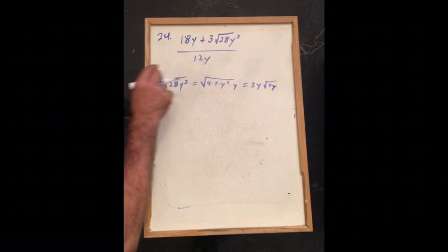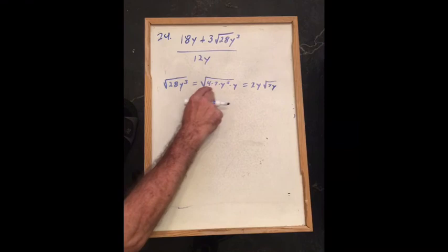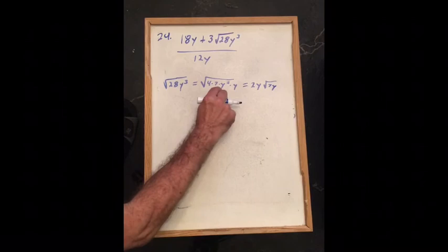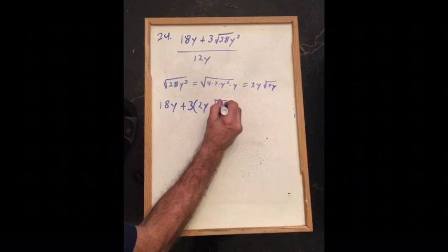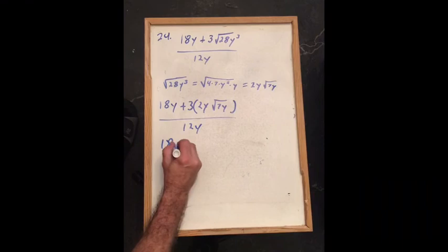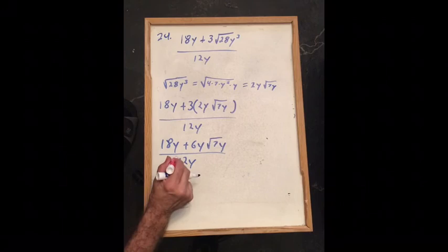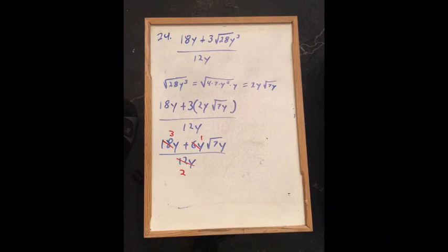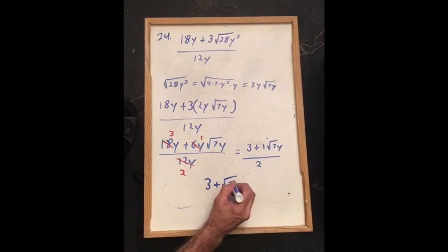For problem 24, we simplify (18y plus 3 root of 28y³) over 12y. Looking at root 28y³: 28 is 4 times 7, and y³ is y² times y, so the 4 comes out as 2 and y² comes out as y, leaving root 7y inside. This gives 18y plus 3 times 2y root 7y, all over 12y, which is 18y plus 6y root 7y over 12y. Factoring out 6y gives (3 plus root 7y) over 2.